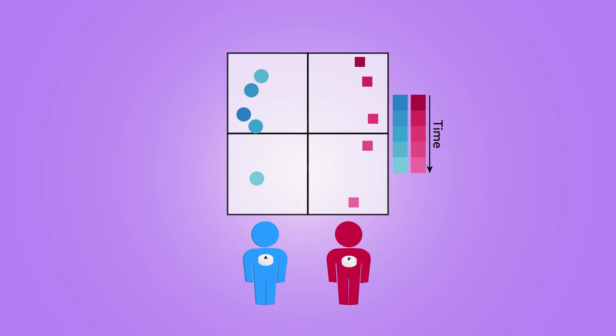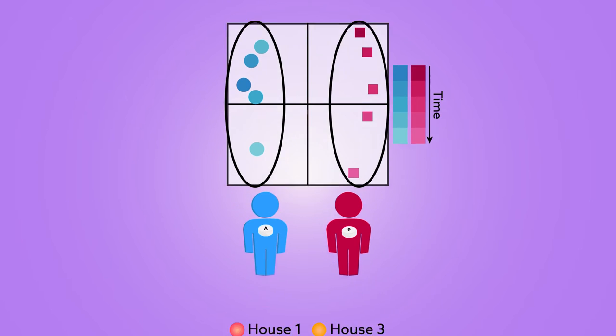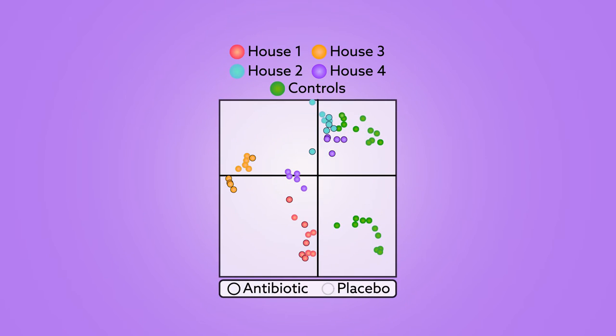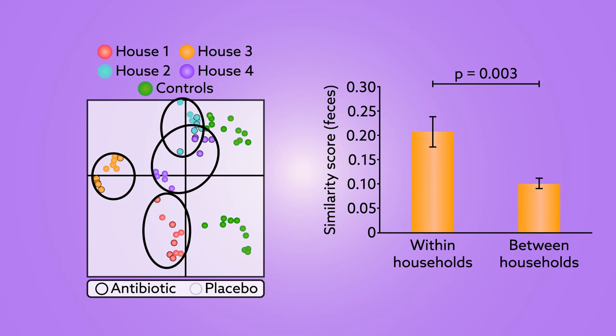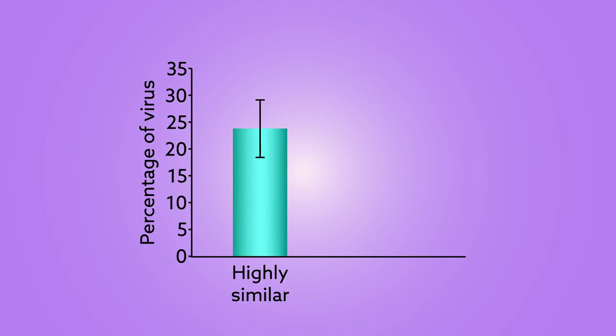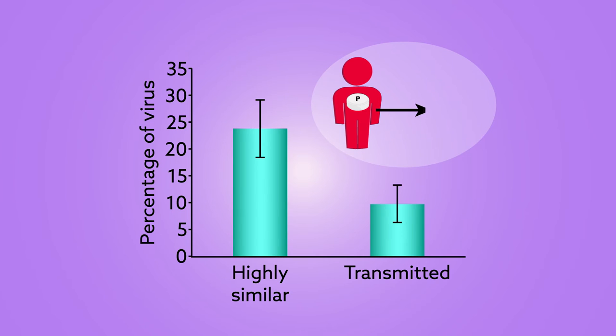Although individuals had their own unique set of viruses, housemates were often alike. In an analysis of viral ecology, households clustered together, and the gut viromes of cohabitants were genetically similar. About a quarter of gut viruses in housemates were highly similar, and 10% had evidence of transmission, usually from placebo takers to those on antibiotics.